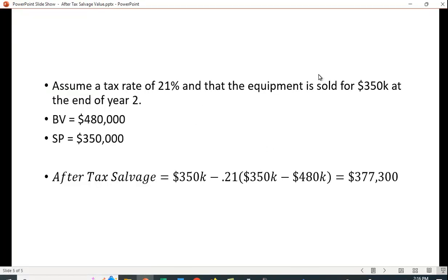Suppose it's the case where you sell it for $350,000 again, but this time you sell it in year two for $350,000. The book value is $480,000, so in this case you have a loss. You're selling it for less than its book value, so you're going to get some tax savings here.